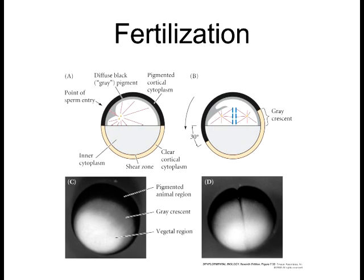In Xenopus frogs, the fertilization event isn't just about fusing nuclei — it actually matters where the sperm enters. The top half of the frog embryo is dark, the animal pole, with a lower concentration of yolk. Sperm can only enter this top animal pole half. As the sperm enters, that actually predetermines the axes of the Xenopus embryo.